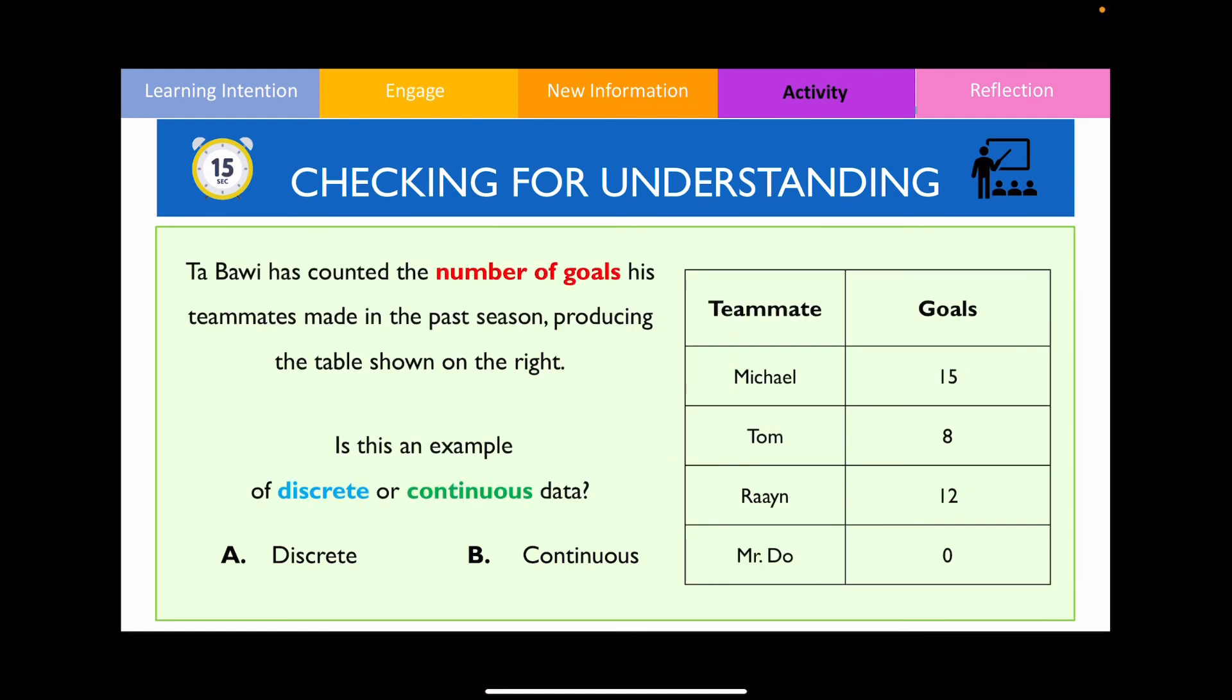Have a go with another question. In this question, this is going to be an example of discrete data. The reason being is because the number of goals that you score can only take on fixed values. It can only take on whole numbers in this case. So this is why it's considered to be discrete rather than continuous.